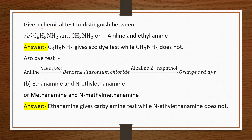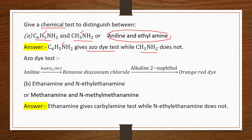To distinguish C₆H₅NH₂ (aniline, aromatic amine) from CH₃NH₂ (methylamine, aliphatic amine): use the azo dye test. Aniline gives the azo dye test while methylamine does not. Similarly, aniline gives the azo dye test while ethylamine does not. In the azo dye test, aniline reacts with NaNO₂ and HCl to form benzenediazonium chloride, which then reacts with alkaline 2-naphthol to give an orange-red dye.